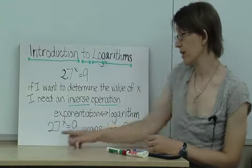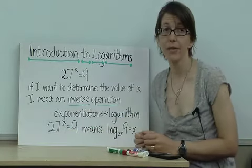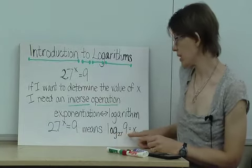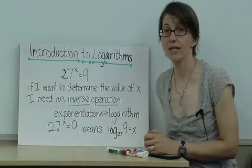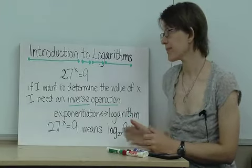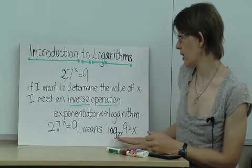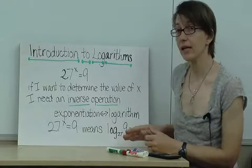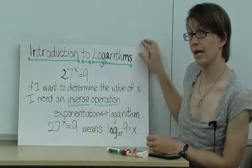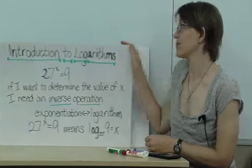If I have this statement, 27 raised to the x power equals 9, then it means the log to the base 27 of 9 equals x. These are two equivalent ways of writing the same valued function. So, when I see this expression, log to the base 27 of 9, it's really saying 27 raised to what power is equal to 9? So you want to start thinking of logarithms as being an alternate way of writing exponents.